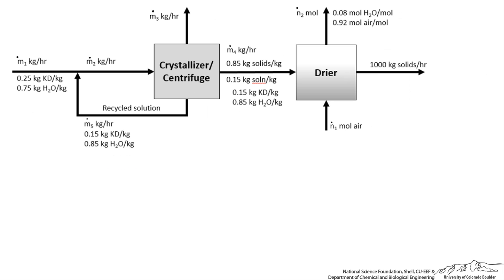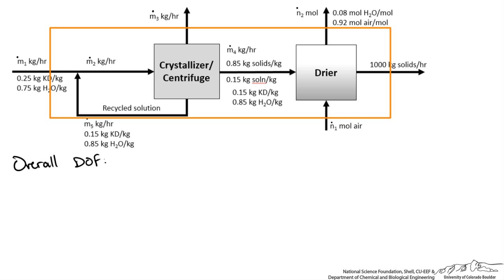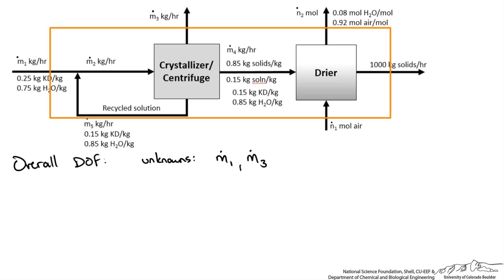Typically the best place to start is by doing a degree of freedom analysis. I will start with the overall process. The unknowns are: mass flow rate of our feed M1, the exit flow rate of water from the crystallizer centrifuge, the molar flow rate of air into the dryer, and the molar flow rate of the exit from the dryer. The composition of air in is pure air and M3 is pure water, giving us four unknowns. We can write three material balances for three species — potassium dichromate, water, and air — giving a degree of freedom of 1.